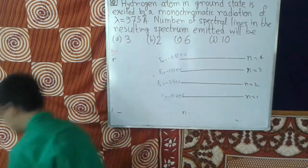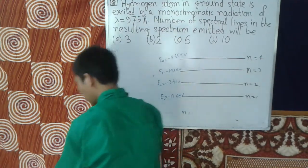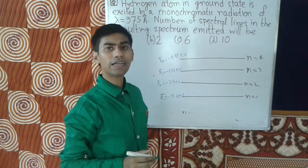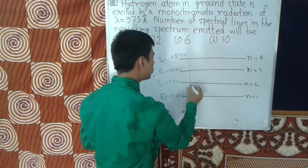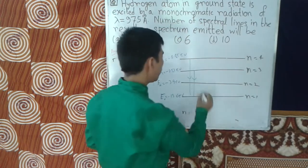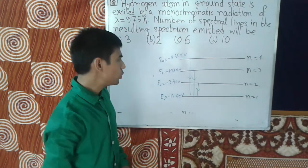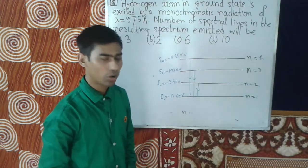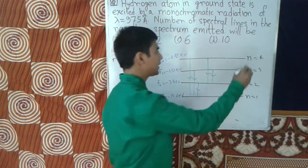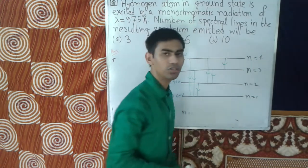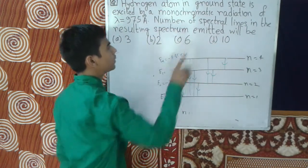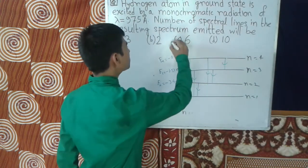The spectral lines arise due to transitions: from n equals 4 to n equals 1, from n equals 3 to n equals 1, and from n equals 2 to n equals 1 — that's 3 lines. Also from n equals 4 to n equals 2, from n equals 3 to n equals 2, and from n equals 4 to n equals 3. So a total of 6 spectral lines are obtained, making option C the correct answer.